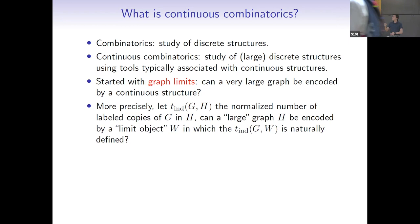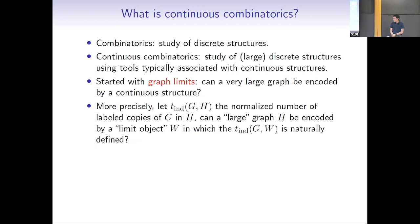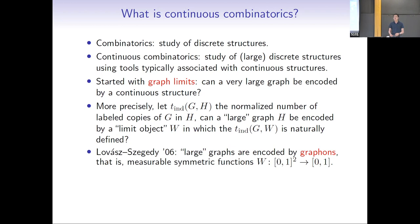More precisely, if I let this quantity be the number of copies of a graph G in a graph H, and I think that H is a very, very large graph, can I instead encode this H in some sort of structure that is kind of continuous — not like a graph — but in which there is a natural definition of this density? The answer is yes, and it was answered by Lovász and Szegedy. They encoded these large graphs as graphons.